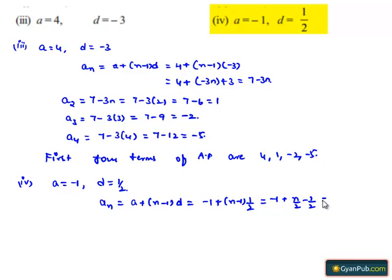Which is equal to -1 minus 1/2, that is n/2 minus 3/2, which equals (n-3)/2.